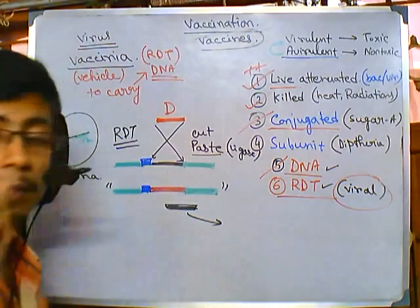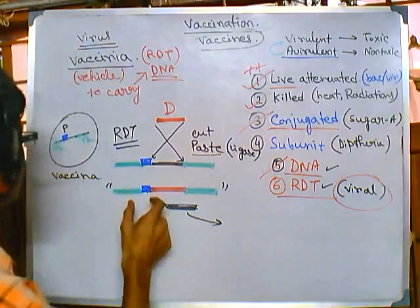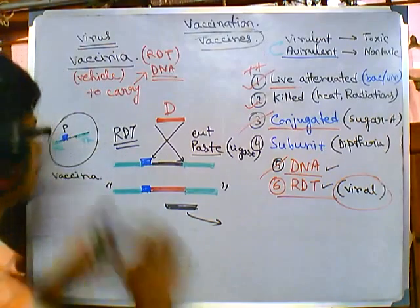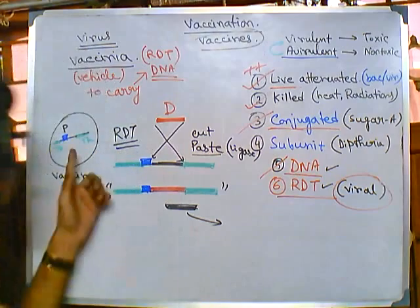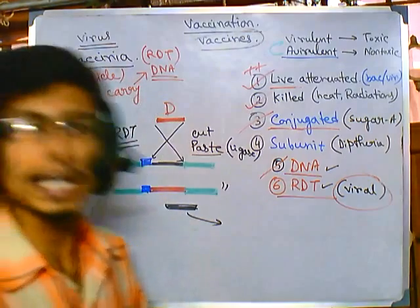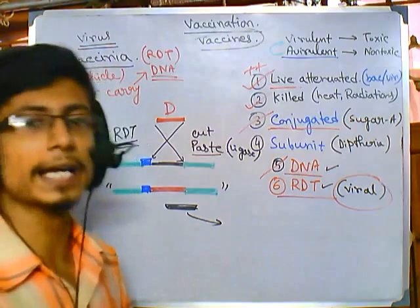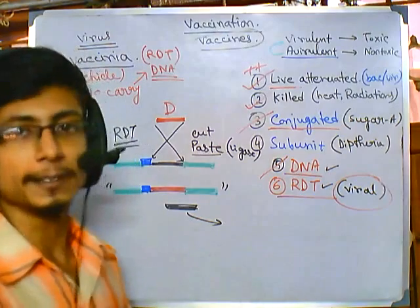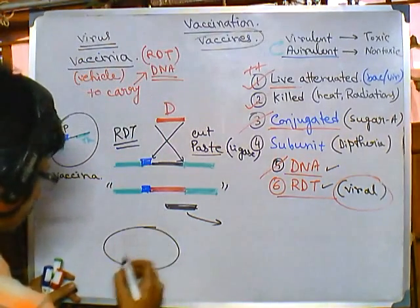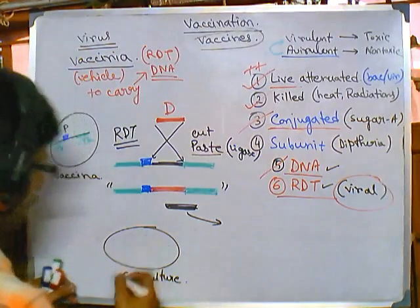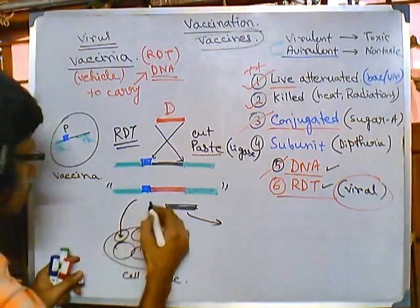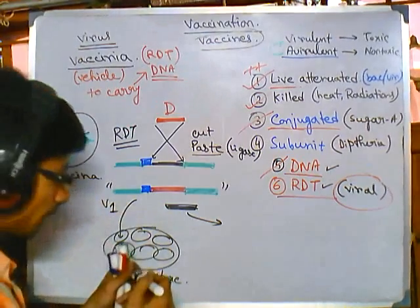Now, our actual goal is to transfer this construct back into the vaccinia virus. However, whatever we have done so far used viral DNA extracted from vaccinia, but the construct is not yet inside the virus. We cannot insert the gene into the virus directly because the virus is inactive outside a host cell. So we use a cell culture or cell line as the host environment.